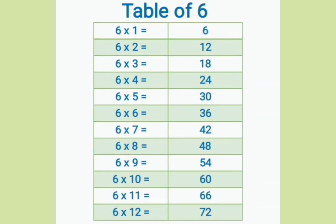Six ones are six, six twos are twelve, six threes are eighteen, six fours are twenty-four, six fives are thirty, six sixes are thirty-six, six sevens are forty-two, six eights are forty-eight, six nines are fifty-four, six tens are sixty, six elevens are sixty-six, six twelves are seventy-two.